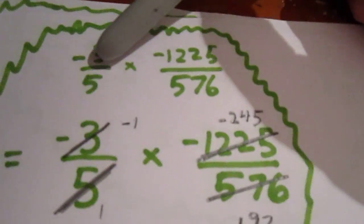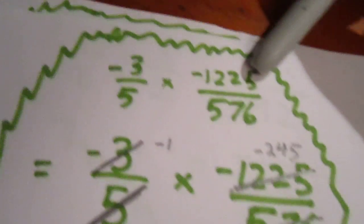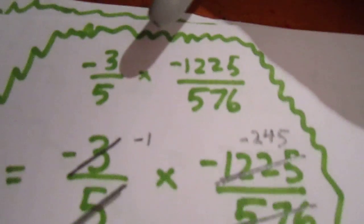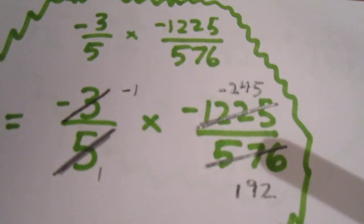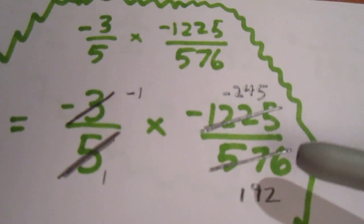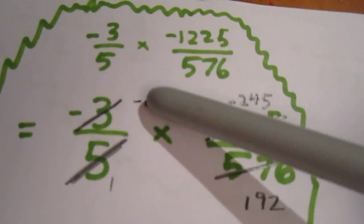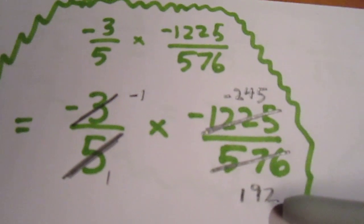In order to do that, we multiply negative 3 halves times negative 1225 over 576. This is a multiplication symbol. And we can reduce. We see that 576 divided by 3 is 192. So, we can reduce this to a negative 1 and reduce this to a 192.